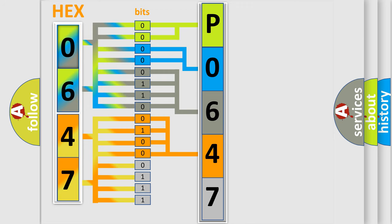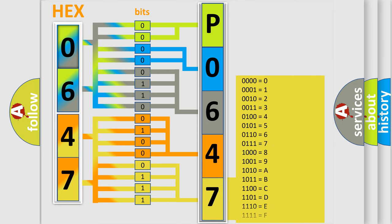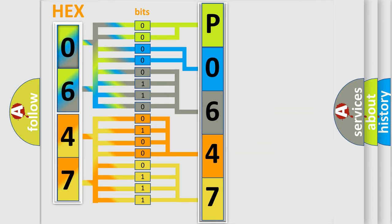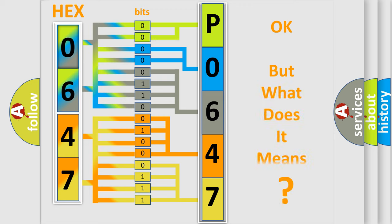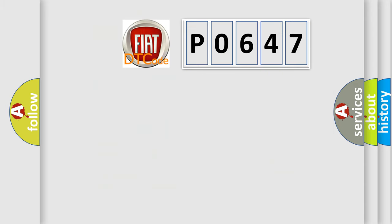A single byte conceals 256 possible combinations. We now know in what way the diagnostic tool translates the received information into a more comprehensible format. The number itself does not make sense to us if we cannot assign information about what it actually expresses. So, what does the diagnostic trouble code P0647 interpret specifically for Fiat car manufacturers?